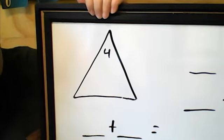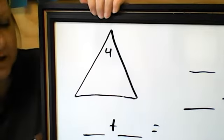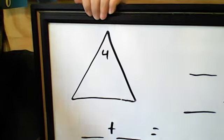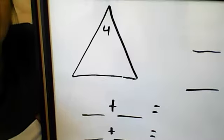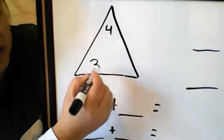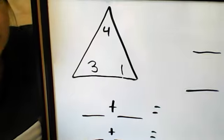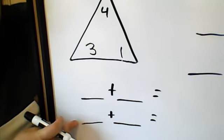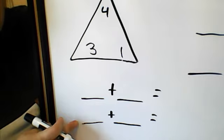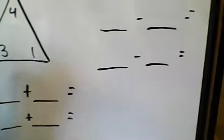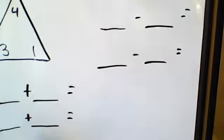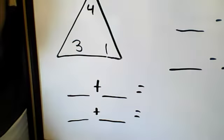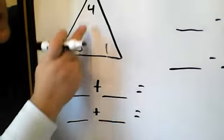And so if I have a four here, what two numbers can we come up with to equal four? A three and a one. So now you can see that I have two number sentences ready to go here, and then I have two number sentences ready to go here. These are addition. These are subtraction. So I'm going to say four.